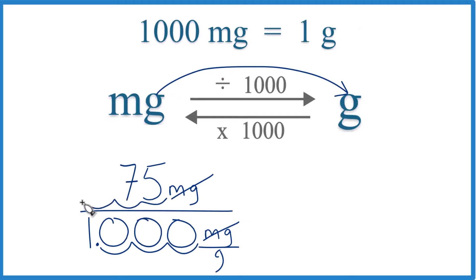1, 2, 3. So we'll put a 0 here, and it turns out that 75 milligrams equals 0.075 grams.